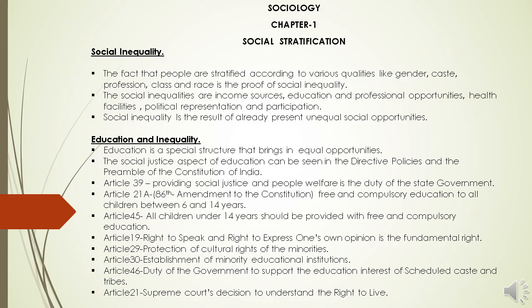Today we are going to see the same topic in detail — on what basis the division is being carried on. The first one is related to social inequality. The fact that people are stratified according to various qualities like gender, caste, profession, class and race is a proof of social inequality. So under the heading of social inequality, people are divided.